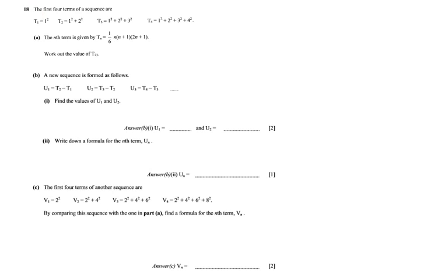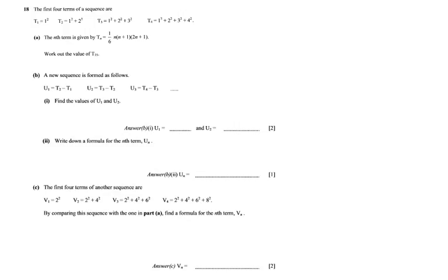It says the first four terms of a sequence are: term 1 is 1 squared, term 2 is 1 squared plus 2 squared, term 3 is 1 squared plus 2 squared plus 3 squared, and it continues like that. They say the nth term is given by the formula Tn = (1/6) × n × (n+1) × (2n+1).